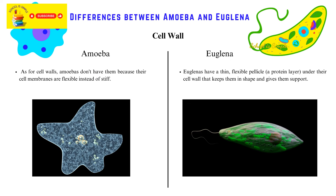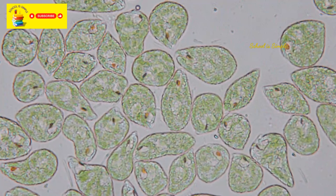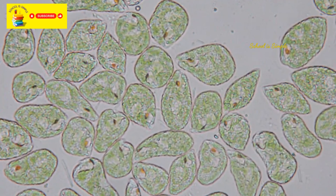As for cell walls, amoebas don't have them because their cell membranes are flexible instead of stiff. Euglenas have a thin, flexible pellicle — a protein layer — under their cell membrane that keeps them in shape and gives them support. Amoebas are incapable of performing photosynthesis due to the absence of chloroplasts, whereas Euglenas have chloroplasts which allow them to perform photosynthesis in the presence of light.